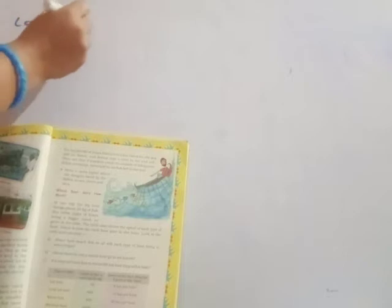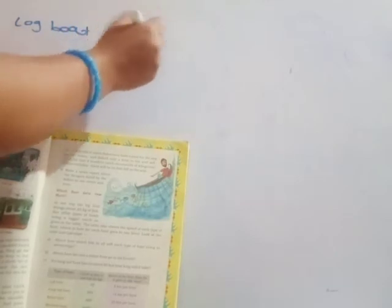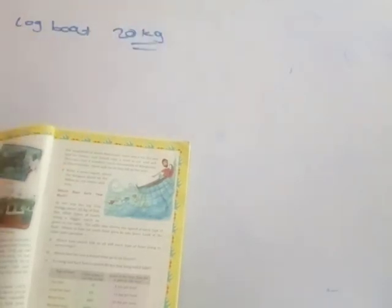Firstly, the log boat. This is a very small boat. The log boat catches fish — in one trip, only 20 kg. In one trip this log boat catches 20 kg of fish. The speed of this boat is 4 km per hour.